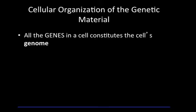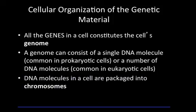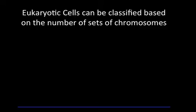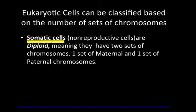The organization of the genetic material has some terminology you should know. All of the genes in a cell constitute the cell's genome. A genome consists of a single DNA molecule, such as in prokaryotic cells, or a number of DNA molecules, common in eukaryotic cells. DNA molecules in a cell are packaged into chromosomes. Eukaryotic cells can be classified based on the number of sets of chromosomes in each nucleus. Somatic cells are non-reproductive cells — they're diploid, meaning they have two sets of chromosomes: one set of maternal and one set of paternal chromosomes.